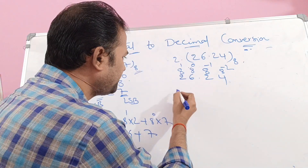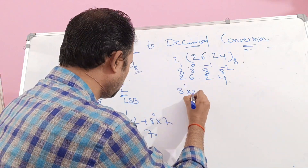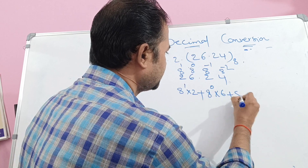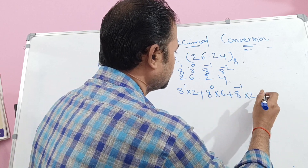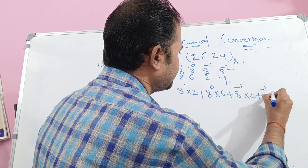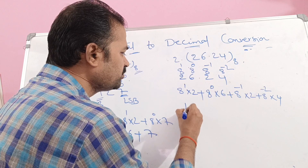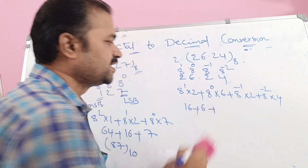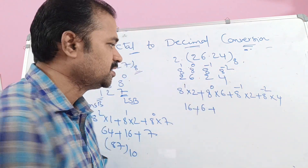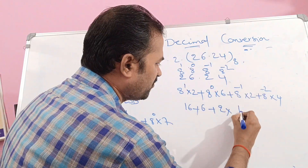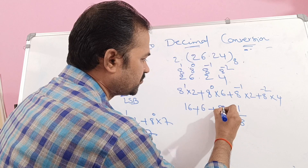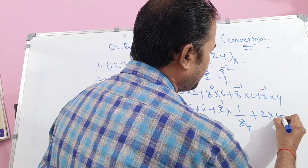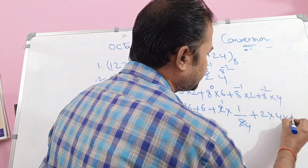Now we perform the multiplication and add the digits: 8 power 1 into 2, plus 8 power 0 into 6, plus 8 power minus 1 into 2, plus 8 power minus 2 into 4. 8 power 1 means 8; 8 into 2 means 16. 8 power 0 means 1; 1 into 6 means 6. For the fractional part, 8 power minus m equals 1 divided by 8 power m.